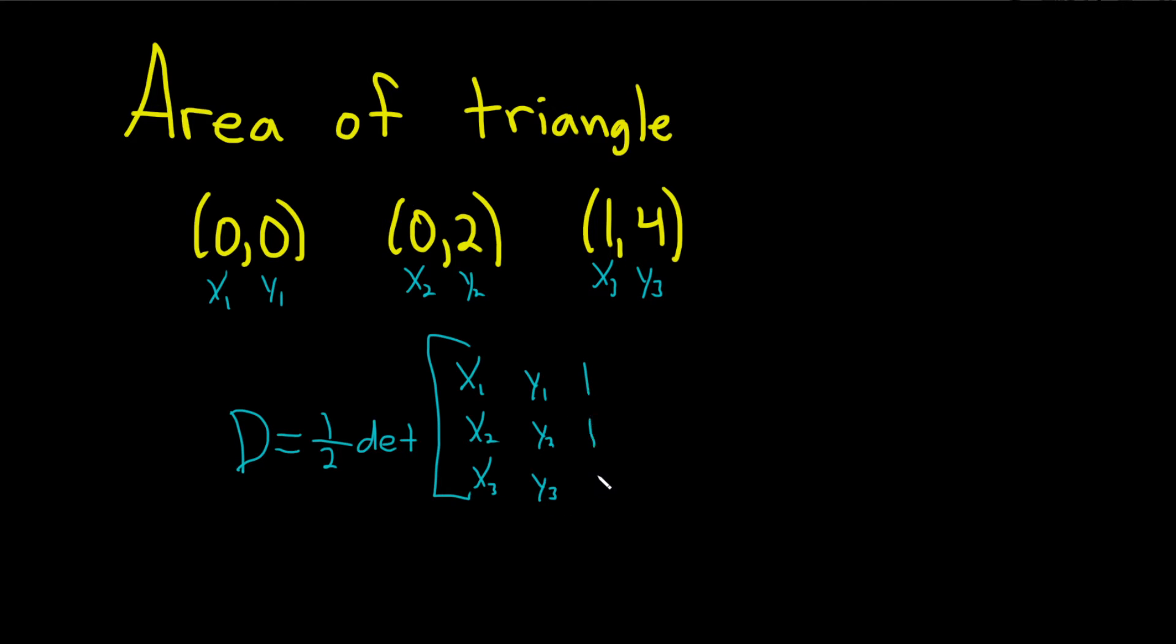And then you just put ones in the third column like this, and this will give you the area of the triangle with these vertices. And now if it's negative, you just have to make sure it's positive. So you basically take the absolute value of the answer here. So when you're done working this out, if you get a negative answer, just make sure to take the absolute value.